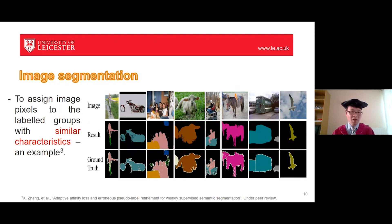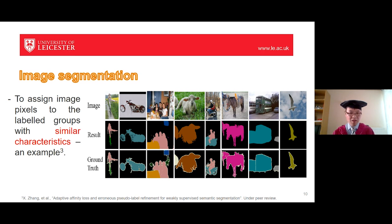The next example is about image segmentation. Image segmentation means we wish to assign image pixels to label groups with similar characteristics. Looking at the second column, we wish to segment a motorcycle from the background. The first row refers to the original image, the second row is the output of our proposed system, and the last row indicates the ground truth — the human labeling result. This work is currently under peer review submitted to a top conference.